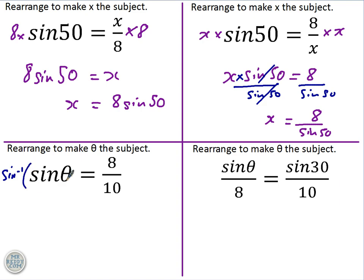So we need to do the inverse of sine to the left-hand side, and we need to do the same to the right-hand side. So what you're left with then, because that cancels out, is theta equals the inverse sine, the arc sine, of 8 over 10.